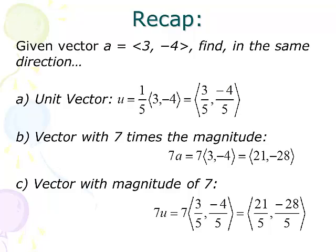To recap: if we give you some vector — for instance 3, negative 4 — and ask for the unit vector, you find the magnitude, which in this case is 5, and multiply the vector by 1/5. The unit vector has a magnitude of 1. If I want a vector with 7 times the magnitude, I multiply the vector by 7 and I'm done — giving 21, negative 28 — same direction, 7 times the magnitude. What gets confused with that is part C: find a vector with a magnitude of 7. That means 7 times the unit vector. Go back to your unit vector, multiply by 7. B and C are often confused, but there's a distinct difference between the two.